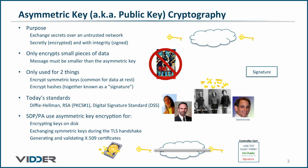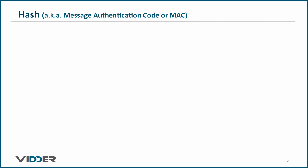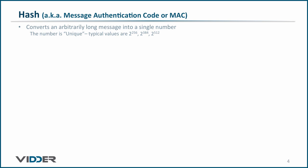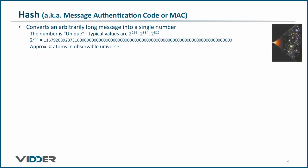But we don't know if someone has tampered with the data along the way. Therefore, we need a third method of cryptography: hashing. Hashing, also commonly referred to as generating a message authentication code, or MAC, converts an arbitrarily long message into a single number, where the goal of the algorithm is to create a unique hash for each message. Typical values for these codes are 2 raised to the 256th, 384th, or 512th power. As you can see on the slide, even the smallest of these values is a very large number.